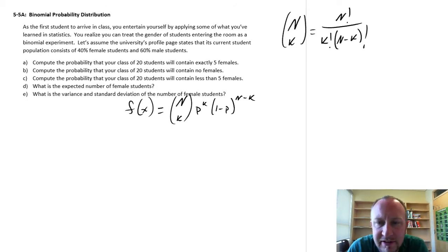So what does this mean? Well before we get into this exercise where now we're going to compute the probability out of 20 students it contains exactly five females,